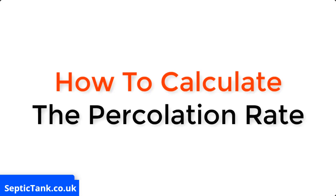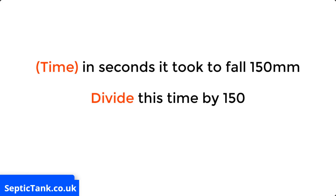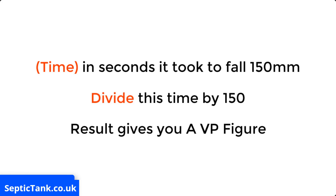So how do you calculate the percolation rate? It's really easy. You take the time it took in seconds for the water to fall 150 millimetres, then you divide this time by 150, and this result will give you a VP figure.